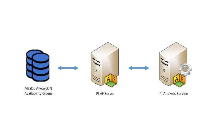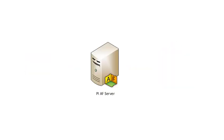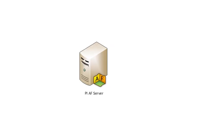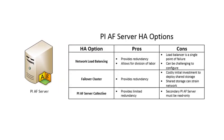Next, what we have is our PI AF server. The PI AF server has a couple HA options. The first being a network load balancer, which provides redundancy and allows multiple AF servers to cooperate between one another. However, it introduces a single point of failure represented by that load balancer, and the switching between the load balancer can be challenging to configure.